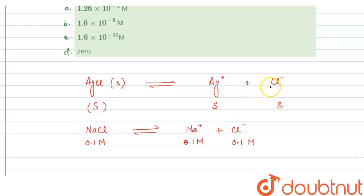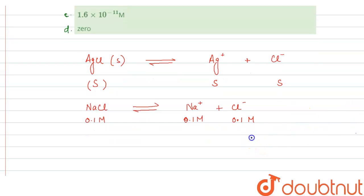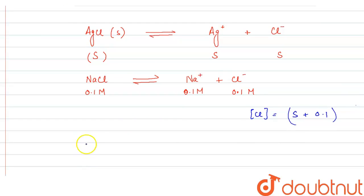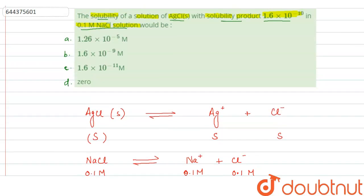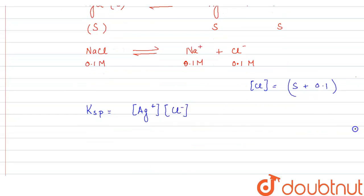The total concentration of chloride ions in the solution will be s + 0.1, because chloride ions come from both AgCl and the NaCl solution. We know that the solubility product Ksp equals the product of ionic concentrations. So Ksp of AgCl equals concentration of Ag⁺ times concentration of Cl⁻. Putting in values: Ksp = 1.6 × 10⁻¹⁰ = [Ag⁺] × [Cl⁻] = s × (s + 0.1).